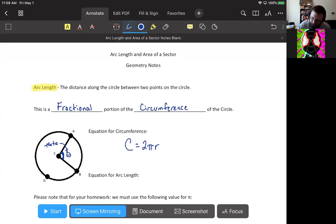So for arc length, what we do is we take that measurement theta, we divide it by 360, and then we multiply that fraction by the circumference. So the arc length, L, is equal to theta over 360 times 2πr.